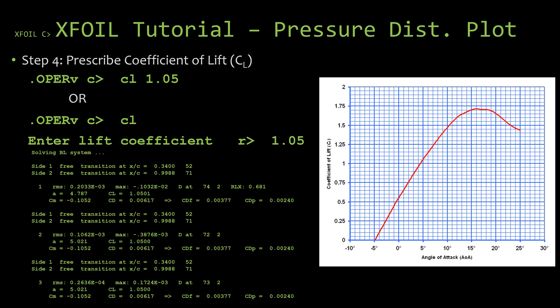Now, since we're in viscous mode, you'll see down there, the smaller text is just what is shown after you enter the command. So you'll see it's saying it's solving the boundary layer system and it's going through a couple iterations. So that's kind of what you see on the X-FOIL menu when you do this.